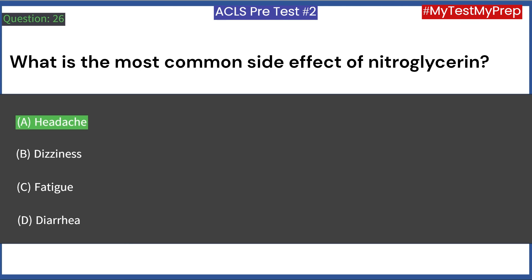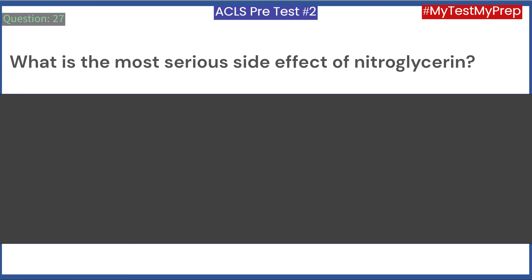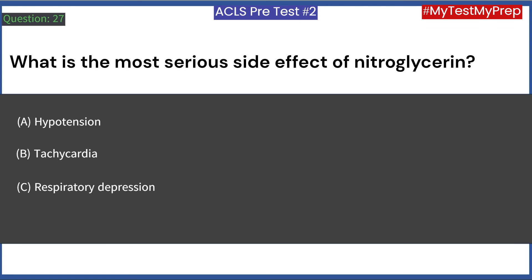What is the most serious side effect of nitroglycerin? A. Hypotension. B. Tachycardia. C. Respiratory depression. D. Cardiac arrest. Answer: A. Hypotension.